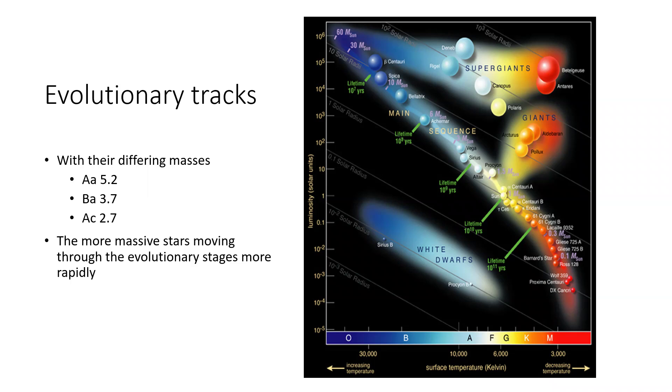But with those masses, they will evolve along their evolutionary tracks at different rates. The most massive stars will evolve most quickly because giant stars, big stars, massive stars live fast and die young. They burn their fuel, even though they have more fuel, they burn it so prodigiously that their lifetimes are shorter. And you can see the lifetimes illustrated along in green on the diagram there.